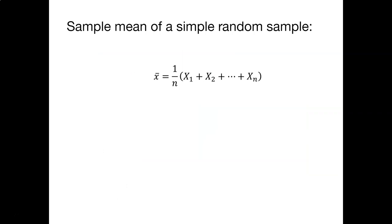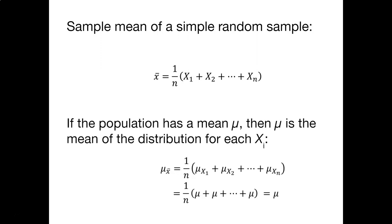To calculate the sample mean of a simple random sample, we sum up all the x values and divide by n. If a population has a mean mu, then mu is the mean of the distribution for each observation x sub i. So we can basically replace x sub i with mu, because mu is the mean of the distribution for each of those observations.